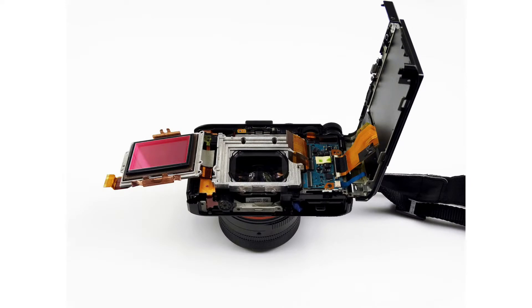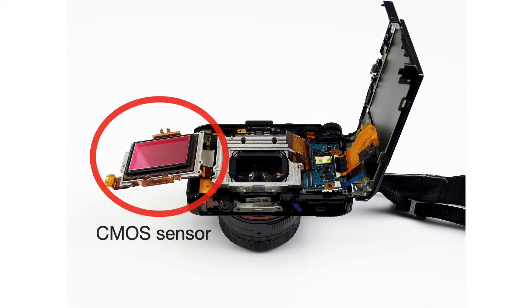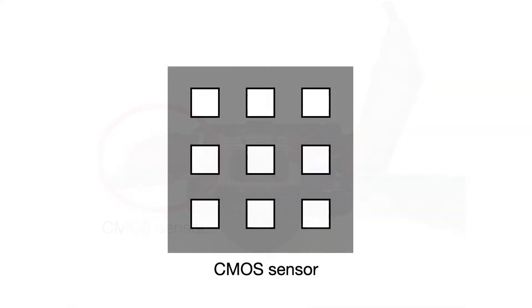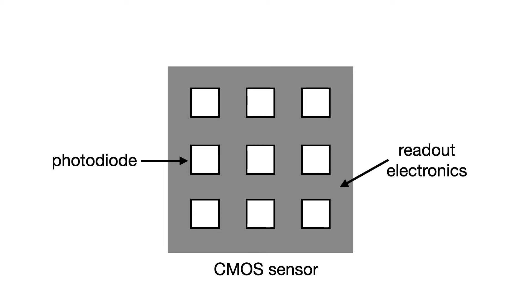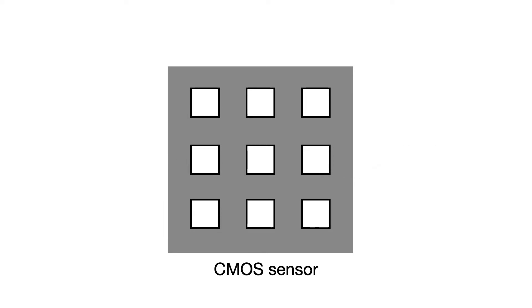If you took your camera apart like this — which I don't recommend — you'd see an image sensor. The sensor is basically an array of light-sensitive photodiodes surrounded by a bunch of electronics. Photons fly in, but only the ones that hit the photodiodes are measured. This is just like throwing out every other row and column, like what we've been doing. So that's going to create some problems.